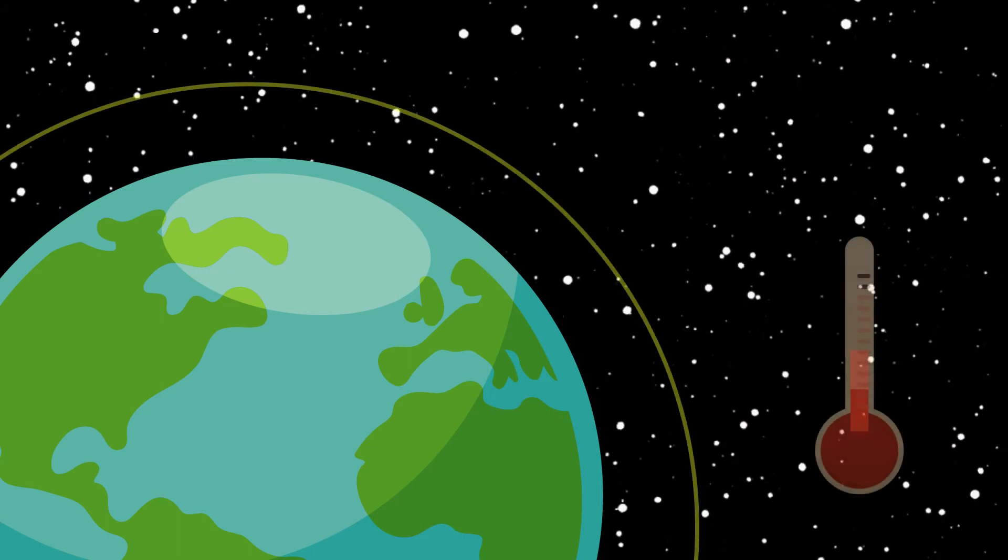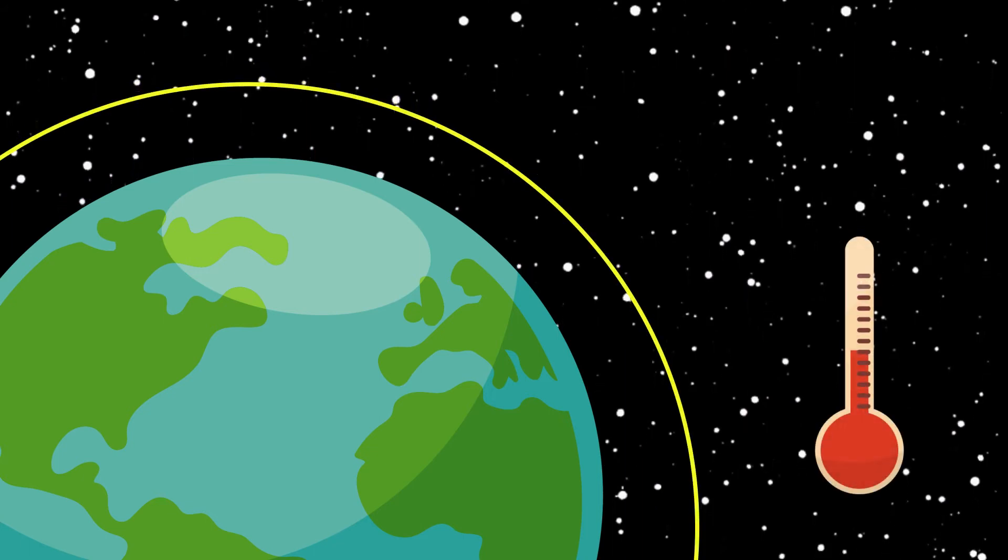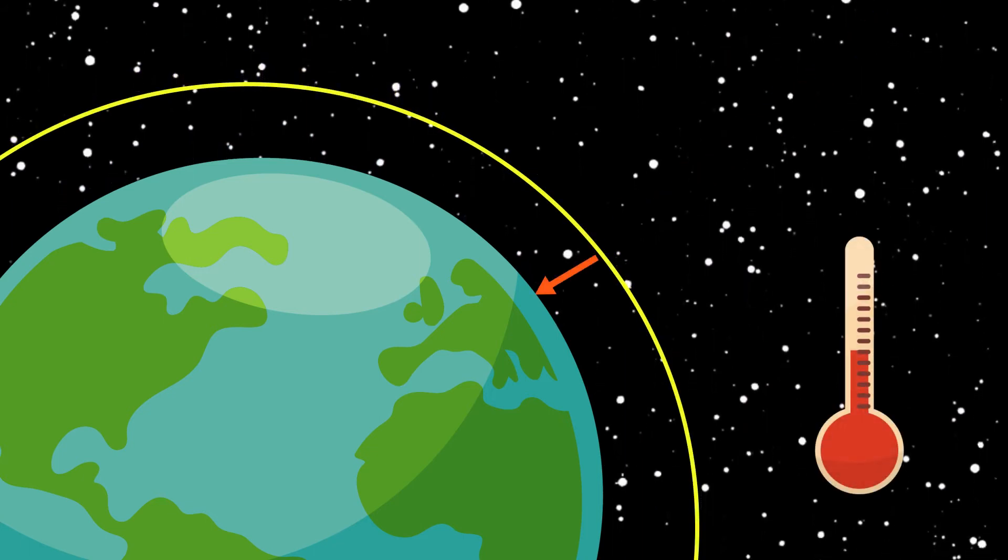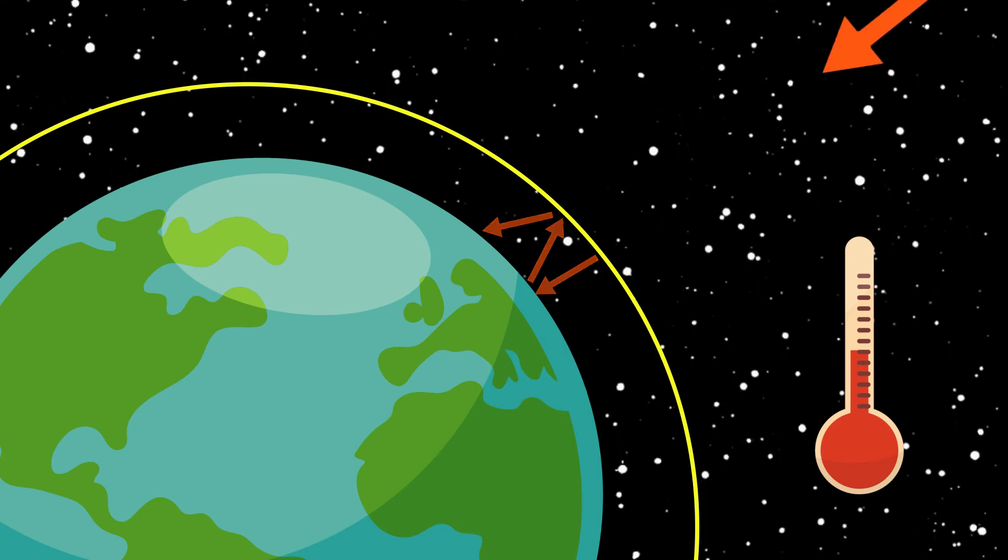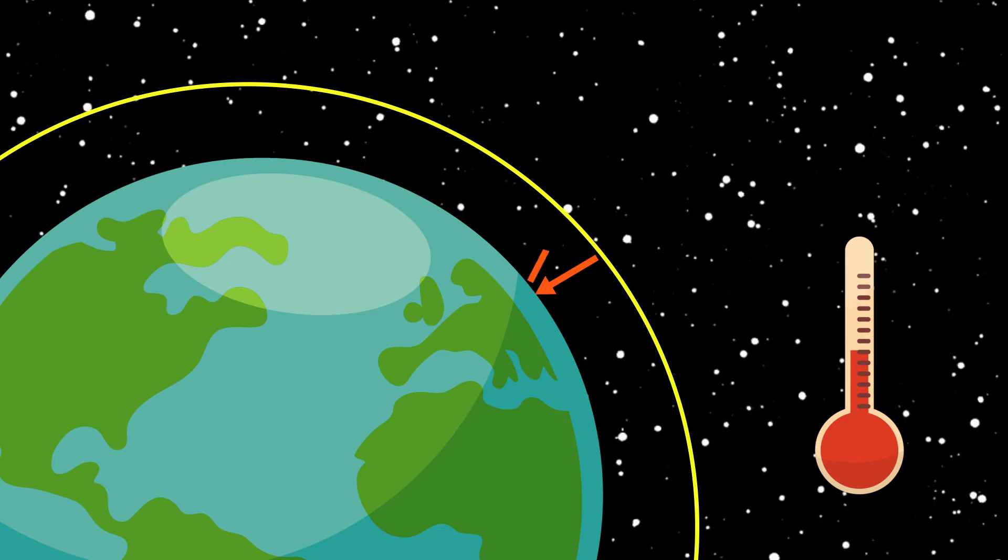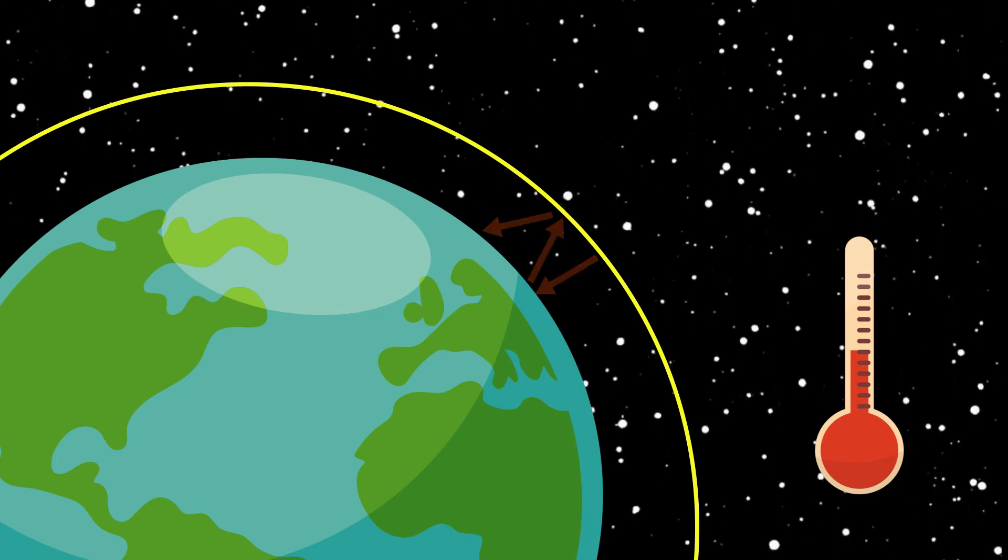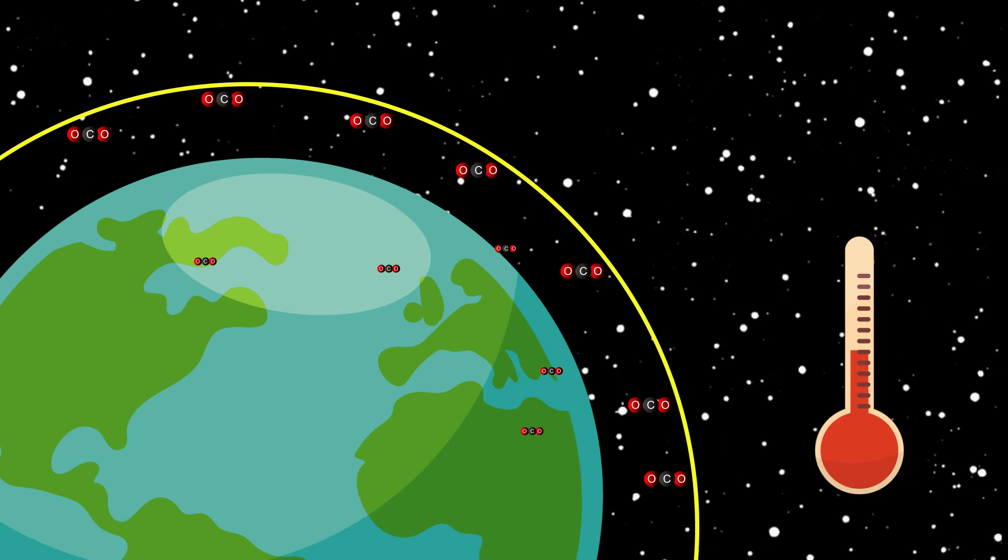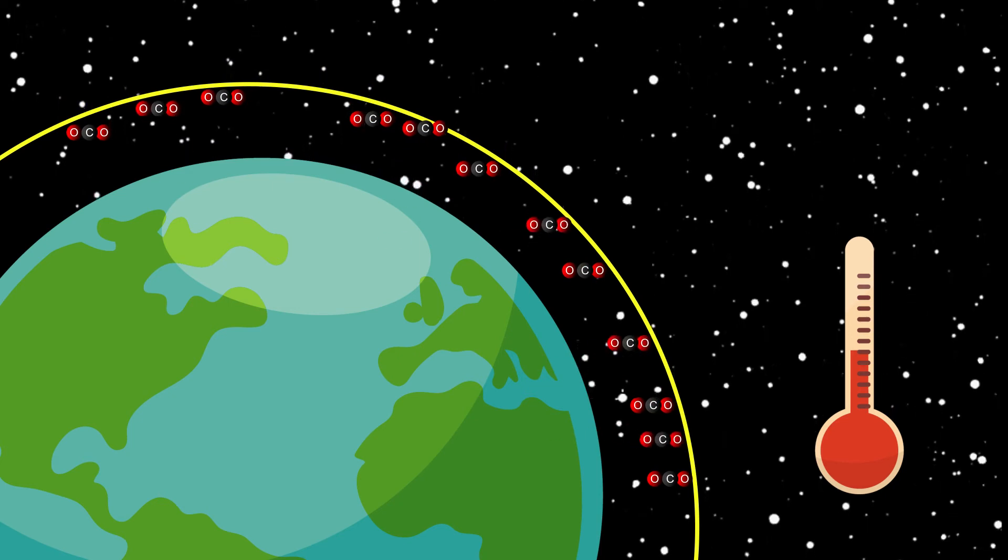This means it causes and intensifies the greenhouse effect, the process by which radiation from a planet's atmosphere warms the planet's surface to a temperature above what it would be without its atmosphere. More carbon dioxide in the atmosphere means that global temperatures rise.